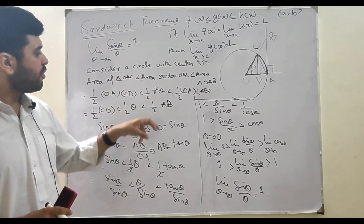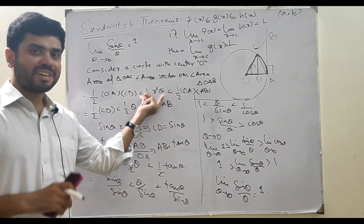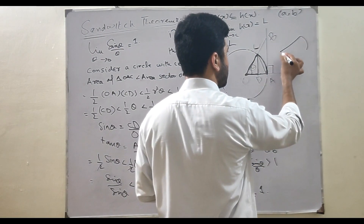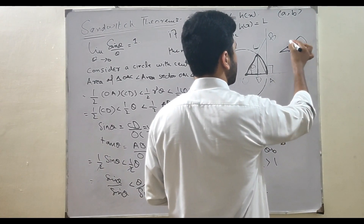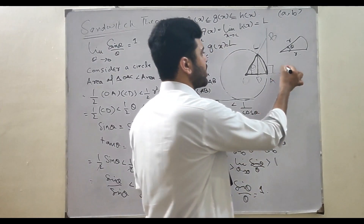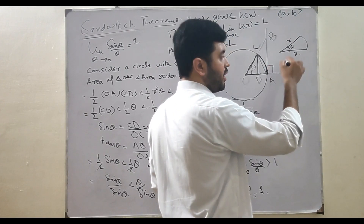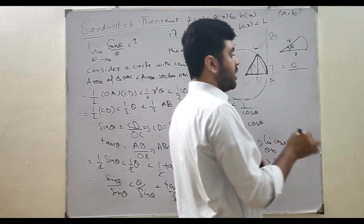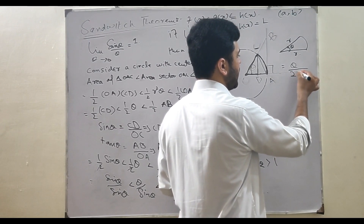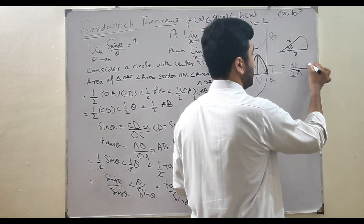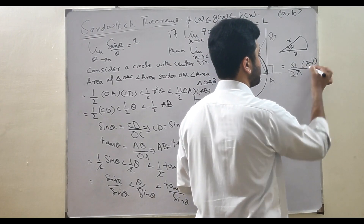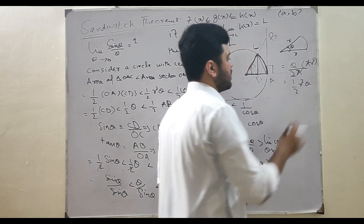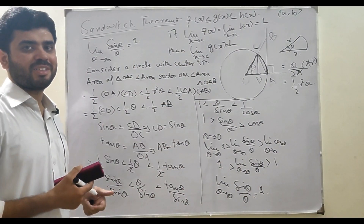Finally, the area of a sector: angle of sector divided by total angle of circle (2π) multiplied by total area of circle (πr²). Simplifying, this gives (1/2) r²θ. So the area of a sector is (1/2) r²θ.